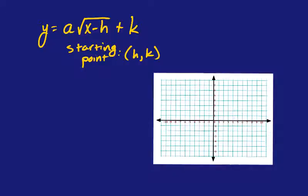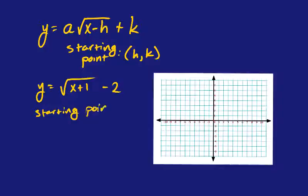So if you have a function like y equals the square root of x plus 1, minus 2, and you want to graph that without a calculator, the first thing you look for is the starting point. Remember when finding h, it's the opposite of what you see — think about what makes x plus 1 equal to 0, which would be negative 1. The k value is out front, which is negative 2. So our graph is going to start at negative 1, negative 2.